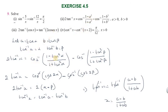We use the substitution: let a = tanα and b = tanβ. Using the formula (1 - tan²θ)/(1 + tan²θ) = cos2θ, the expression cos⁻¹((1 - a²)/(1 + a²)) becomes cos⁻¹(cos2α).